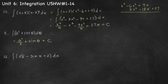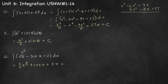Number 12. I think of the square root of x as x to the 1/2 and use the power rule: x to the 3/2 divided by 3/2 is the same as multiplied by 2/3. For negative sine x: the derivative of cosine x is negative sine x, so the antiderivative of negative sine x is cosine x. Plus 2x plus c.